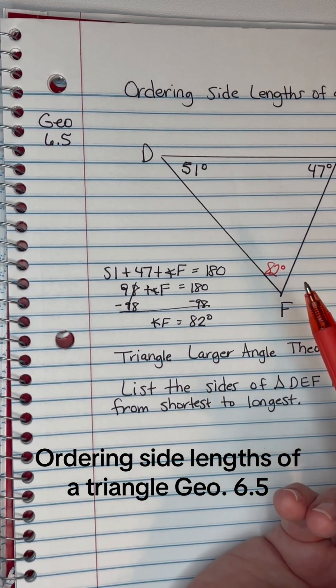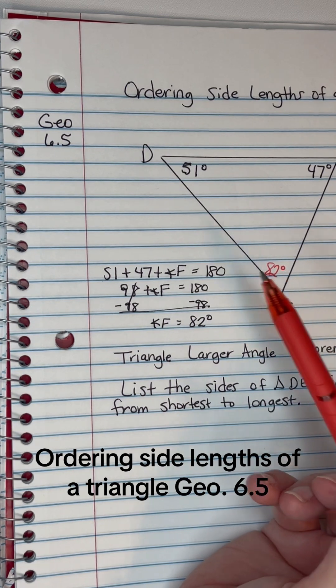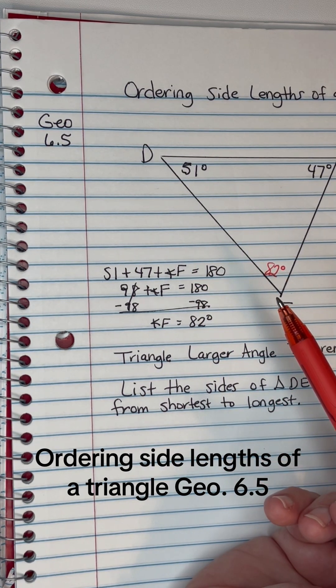thinking about what we said in the last video, the longest leg is opposite the bigger angle, and the shortest leg is opposite the shortest angle.